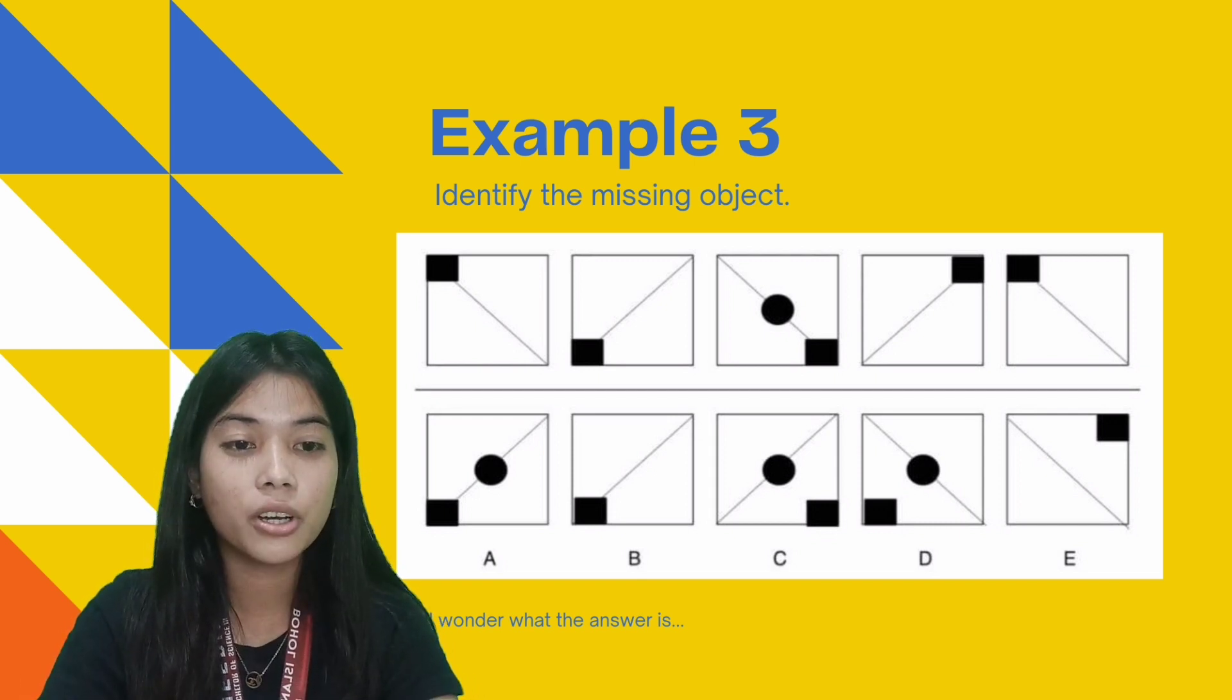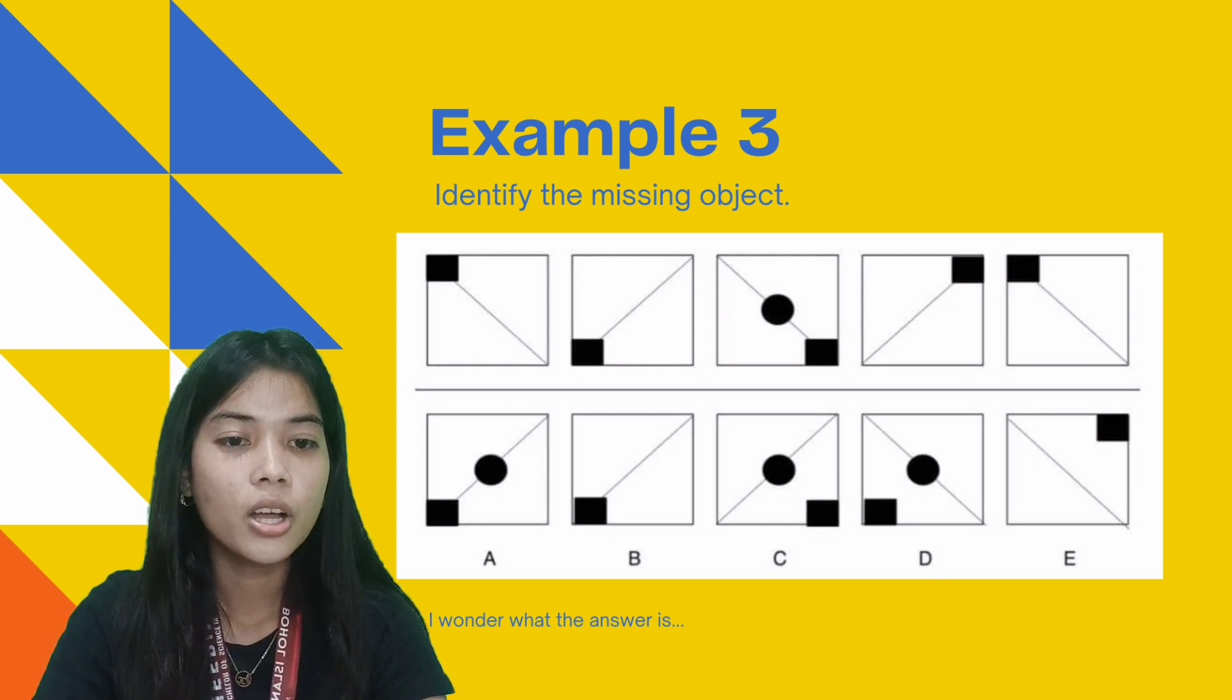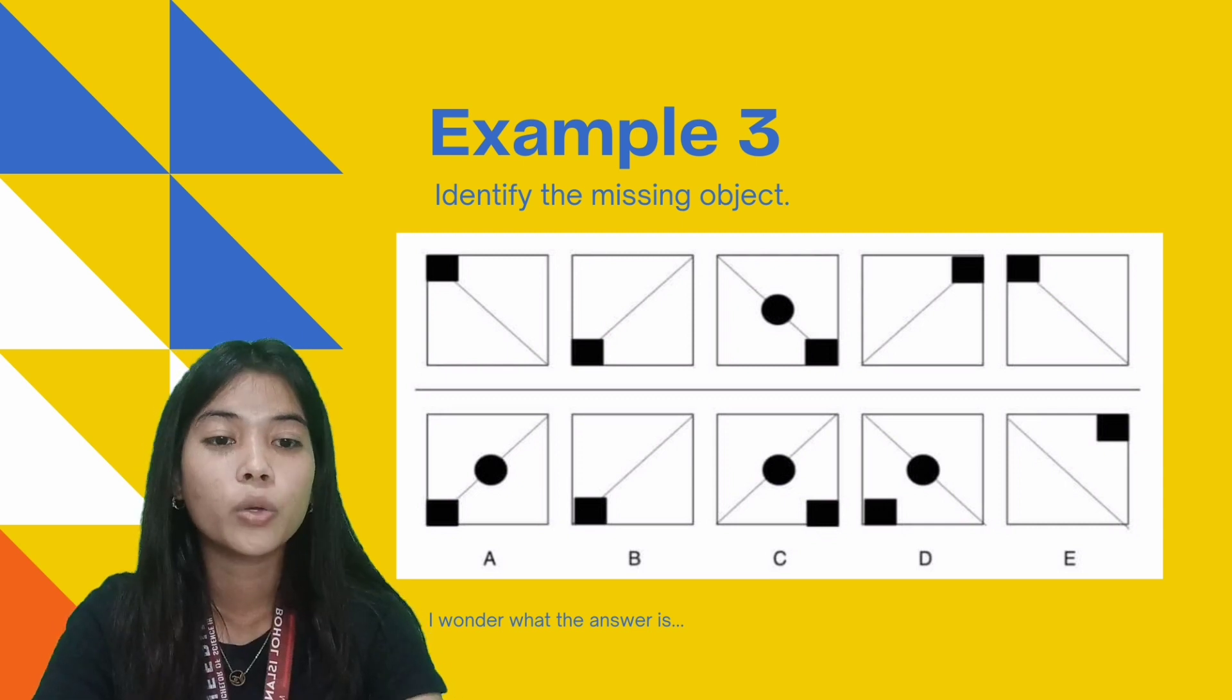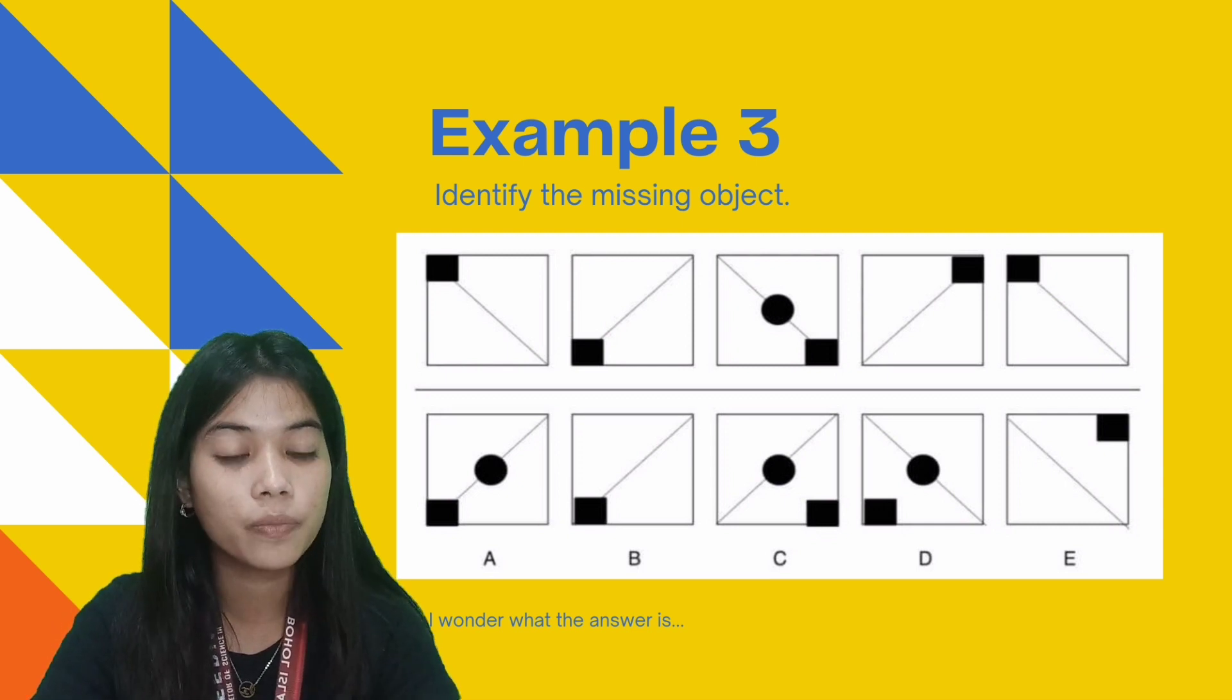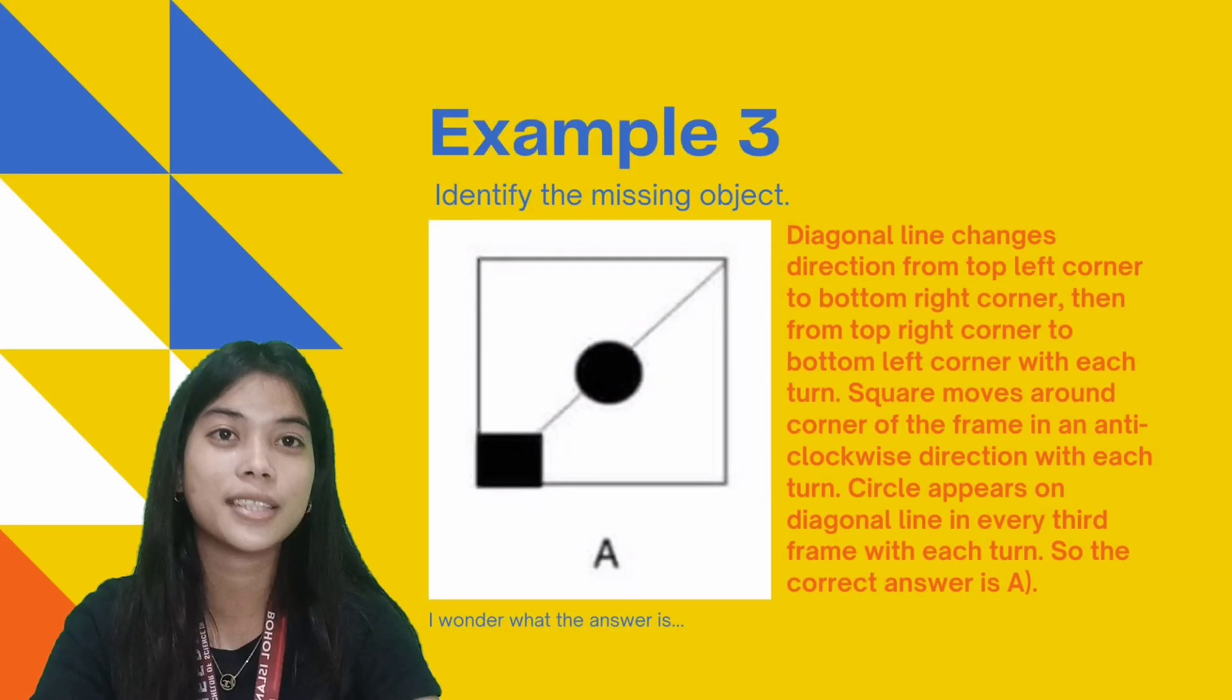Circle appears on the diagonal line in every third frame with each turn. So, we can conclude that in the next figure, which is the sixth figure, the circle will appear. Therefore, the answer is A.